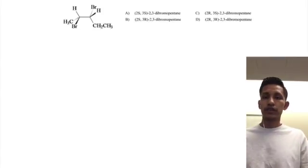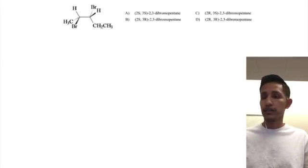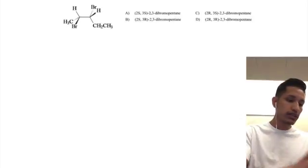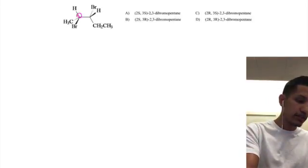Hey guys, so we're going to be going over question two, which asks: what is the IUPAC name of the following compound? This question wants you to determine the R/S configurations of carbons two and carbon three.